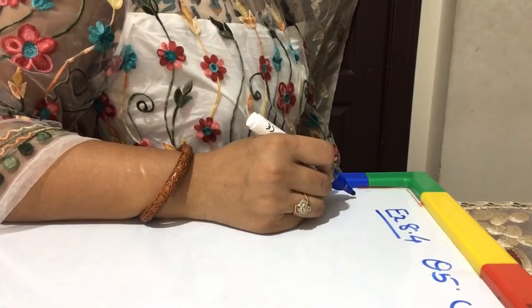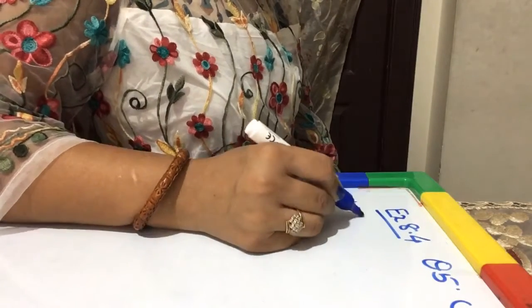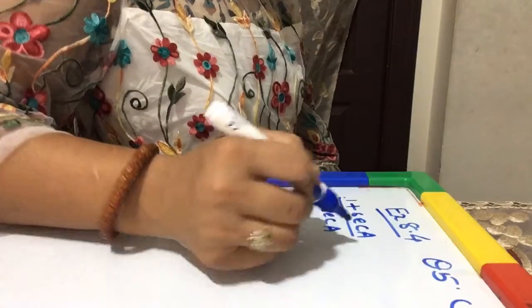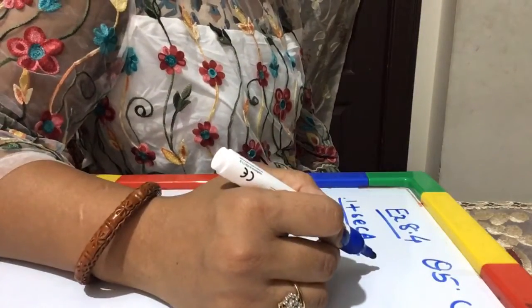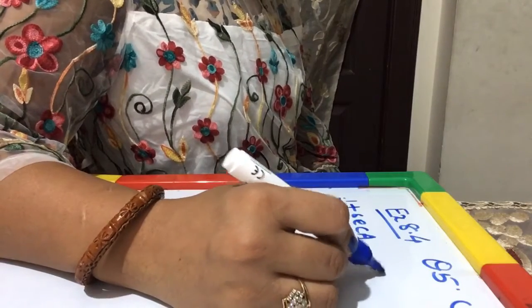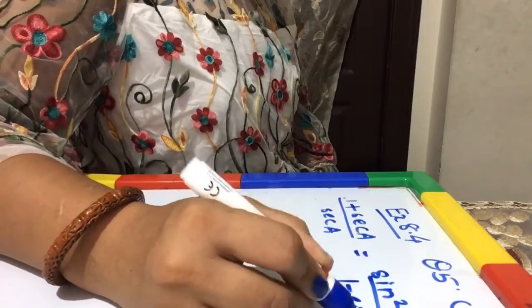I have to prove that (1 + sec A) / sec A is equal to sin²A / (1 - cos A).